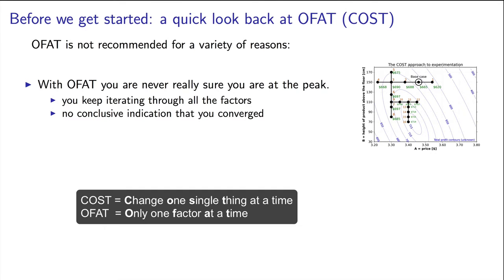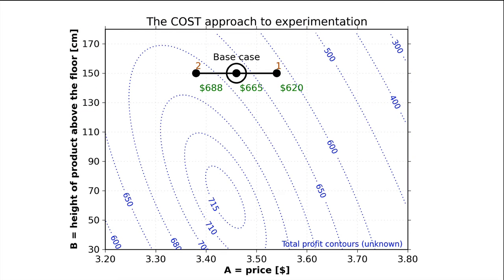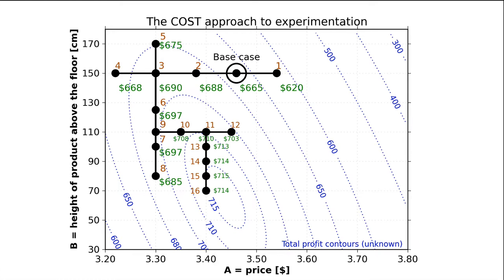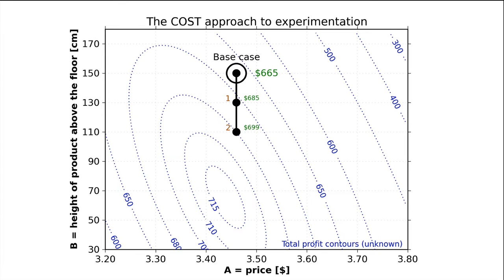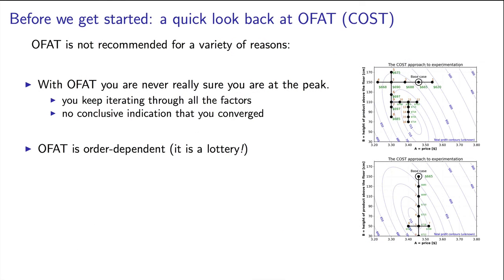Let's quickly contrast the response surface approach with the OFAT approach. The OFAT approach makes you think you're at the optimum, but you can never really be sure. In this case with two factors, you would alternate between optimizing factor A, then factor B, then optimize factor A again, then B again, and you'll eventually get to an optimum. But will you be sure you're at the peak? How do you know you don't need to do another round? Also, if I had optimized B first and then A, I would have arrived at the optimum faster. This seems like a lottery. Sometimes you get to the peak quickly, and sometimes slower. Not surprisingly, statisticians don't like this sort of thing.